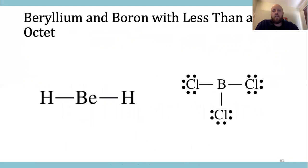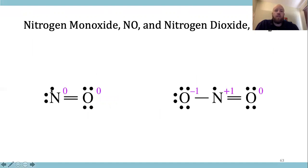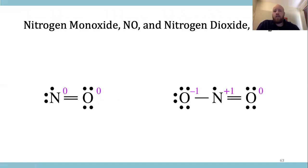There are exceptions to the octet rules. Things like beryllium and boron are never going to have eight electrons around them — they can't. Beryllium uses up its two valence electrons in bonds and that's it. Boron is a non-metal with three valence electrons — it makes three bonds and that's it. There are also examples of what we call free radicals, where an electron is not paired. These are generally very reactive, don't last for very long, and generally want to bond with something.